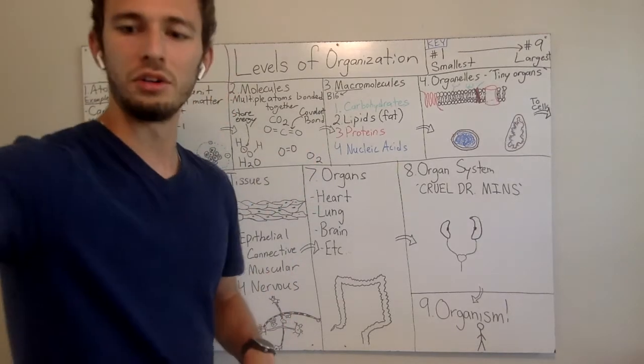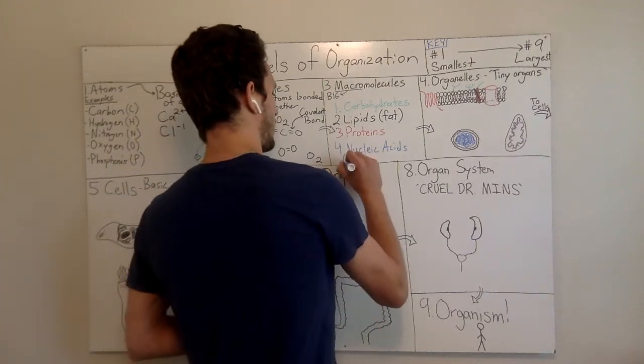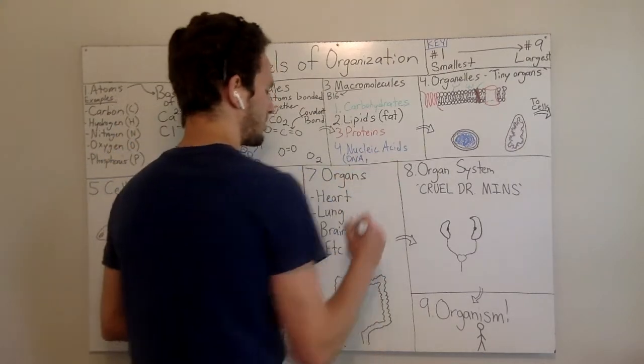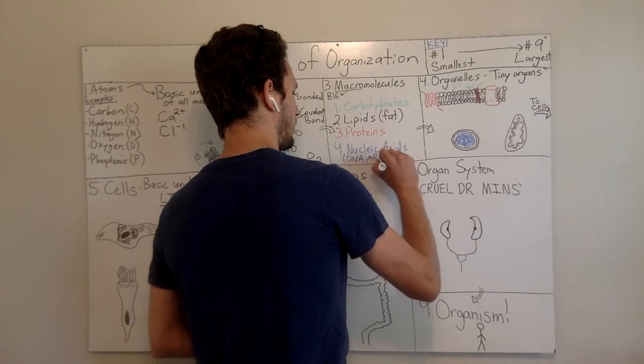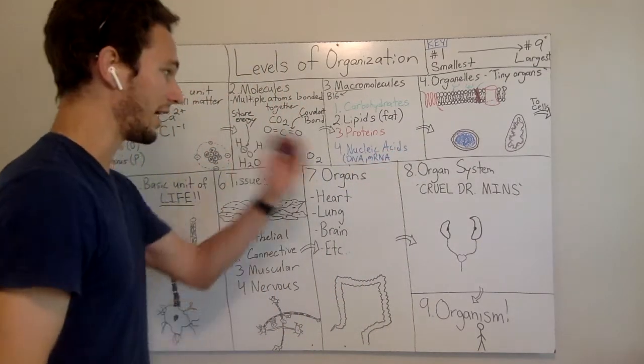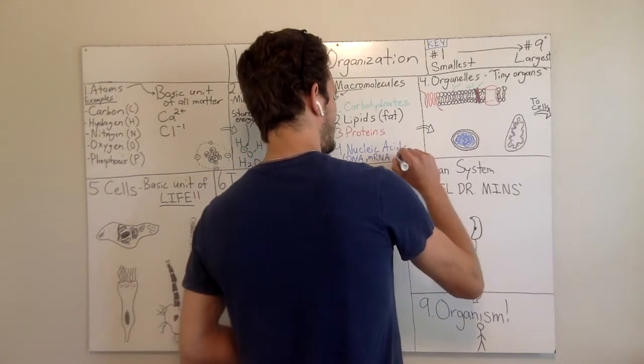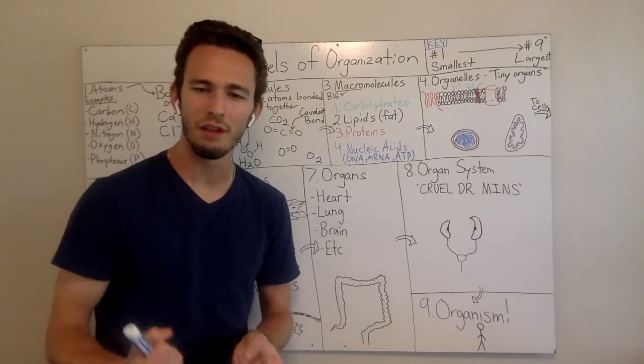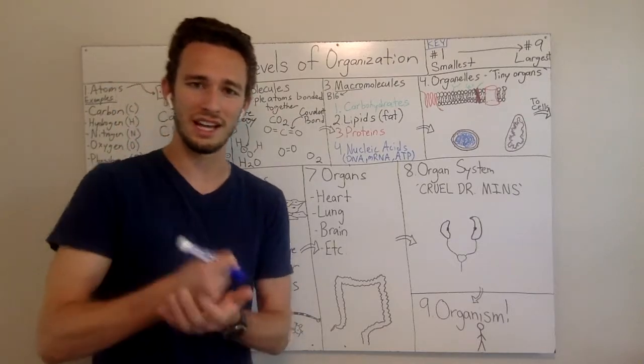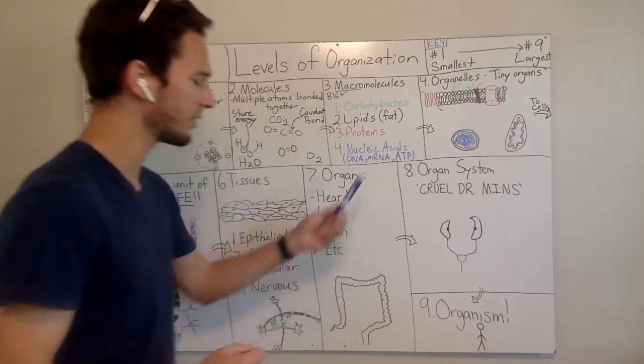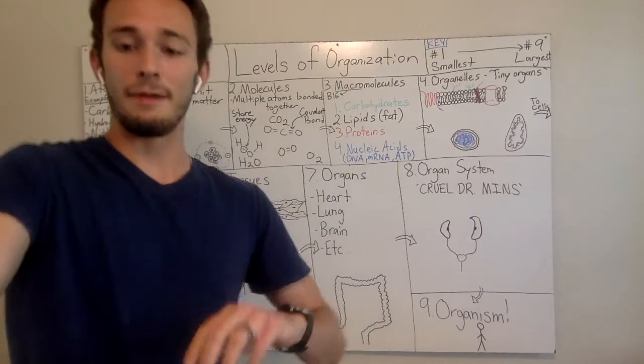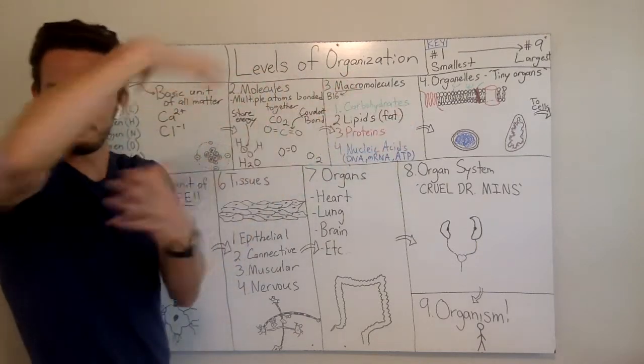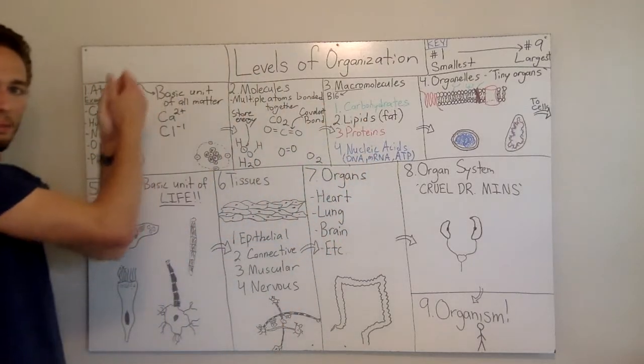But nucleic acids is another one. Some examples you may have heard of are DNA, so your instruction manual for how to build your body. You also may have heard of mRNA from the COVID-19 vaccine that came out. And you may not know this, but ATP, adenosine triphosphate is kind of the energy currency of the cell. A living thing is going to use ATP as its energy source. These are big molecules made of many, many atoms put together into this big chain or circle or whatever the orientation is.